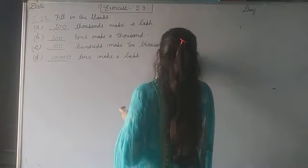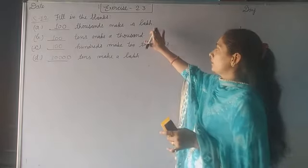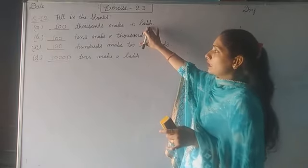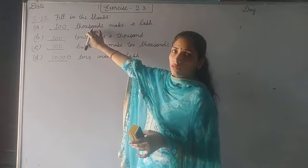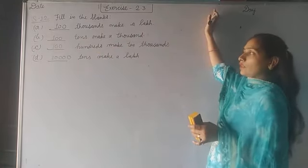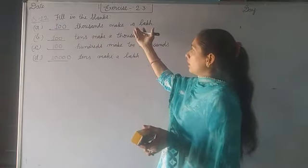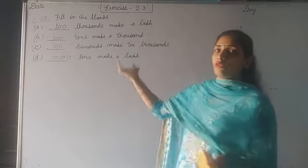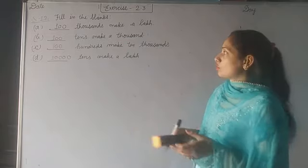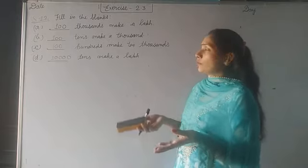See once again. Whenever we do this question, the big number given, from the big number we count the digits of the smaller number and remove those. Then what is left makes the answer. Like hundred makes a lakh, ten makes a thousand. You can find it easily. So this is our exercise 2.3 which completed today.